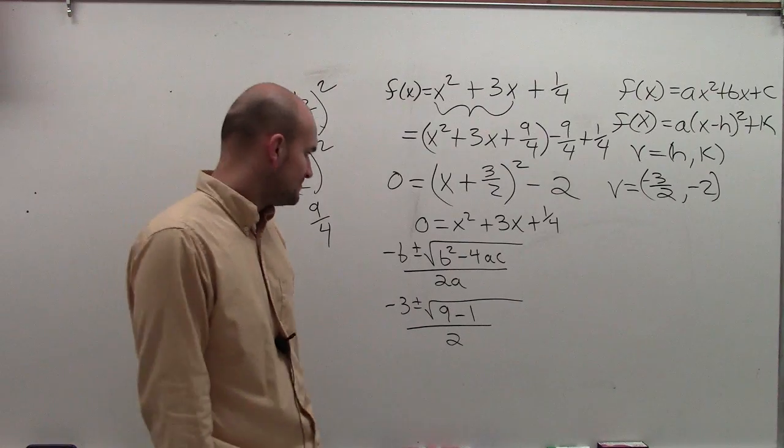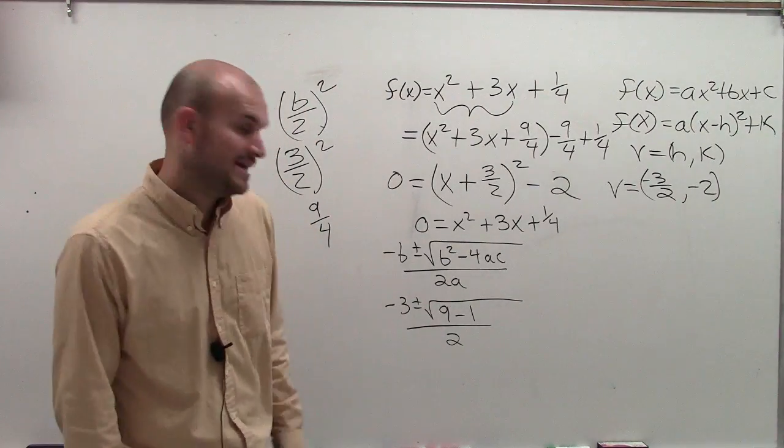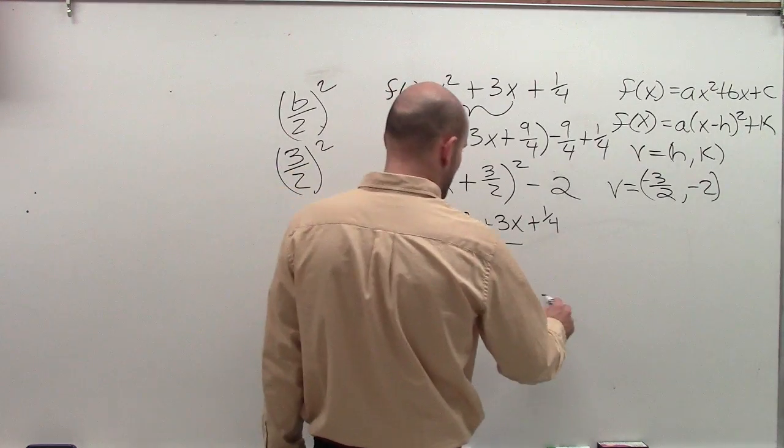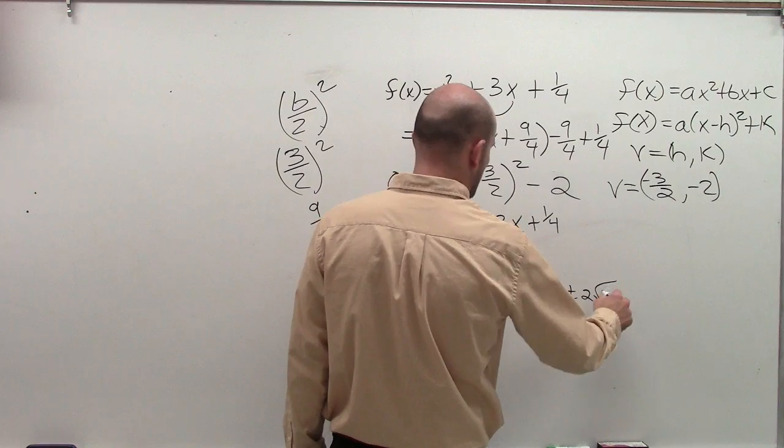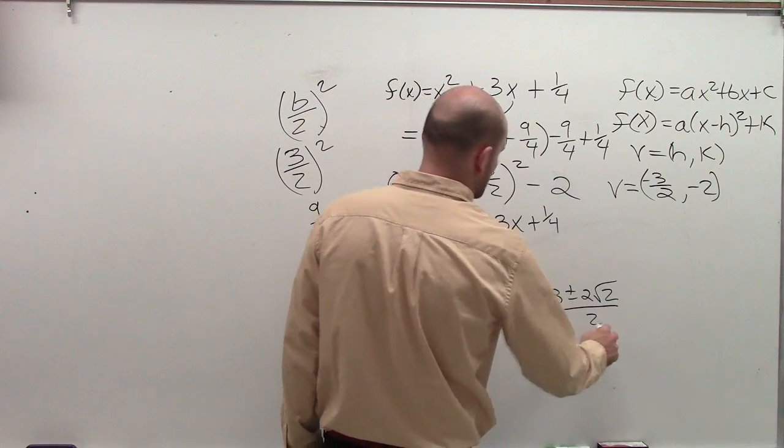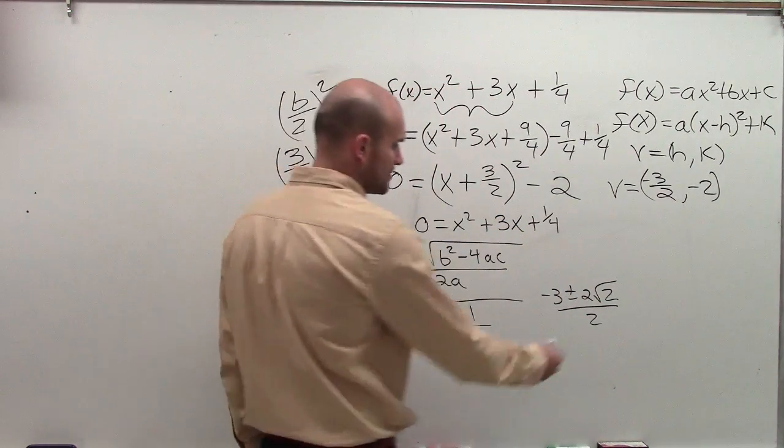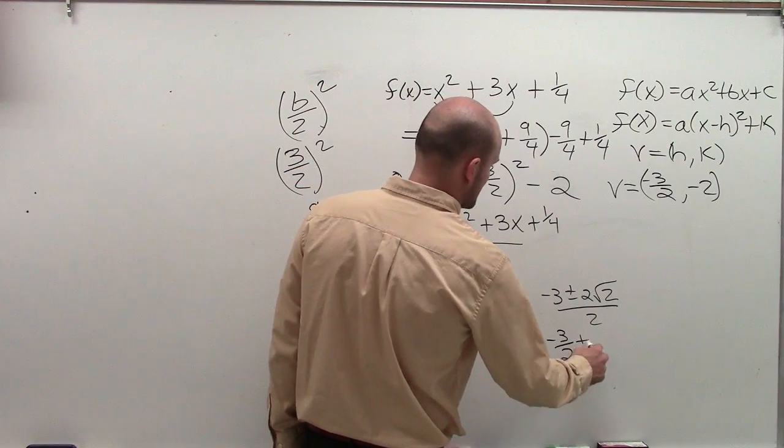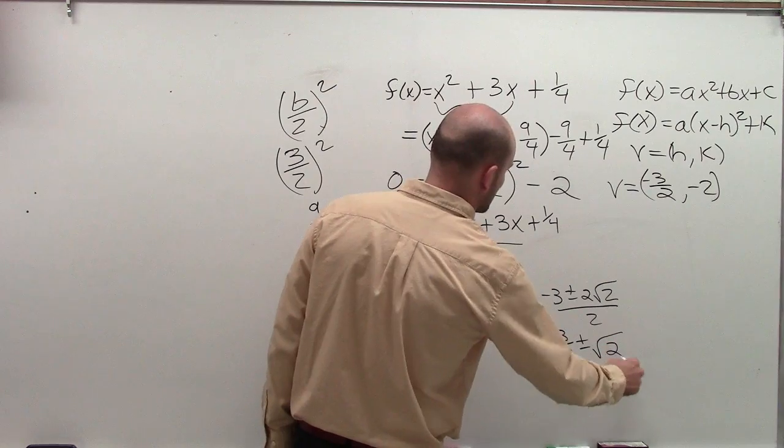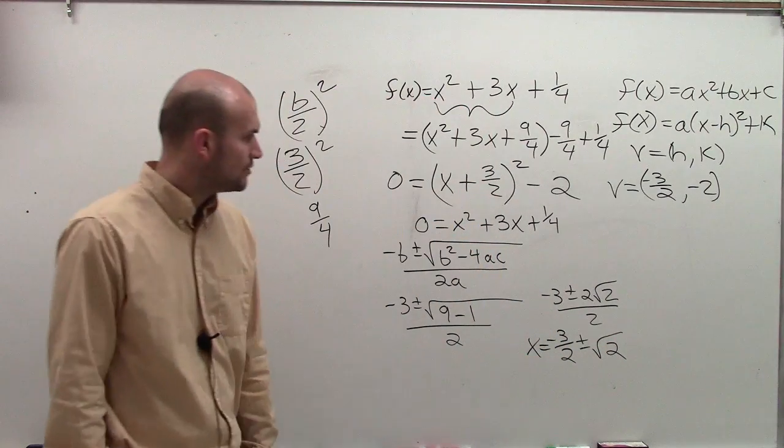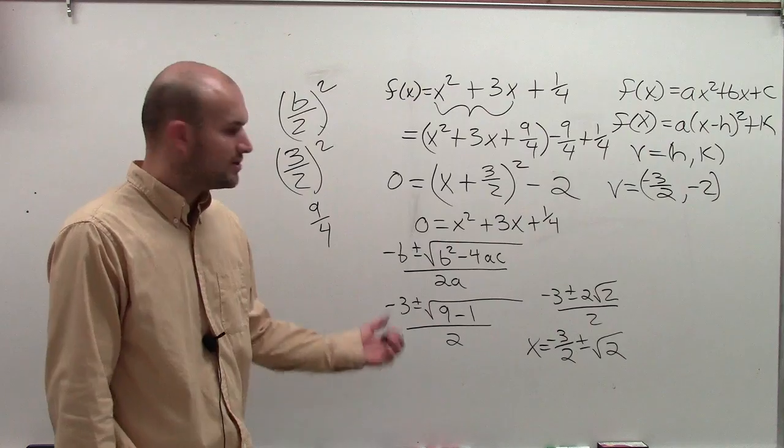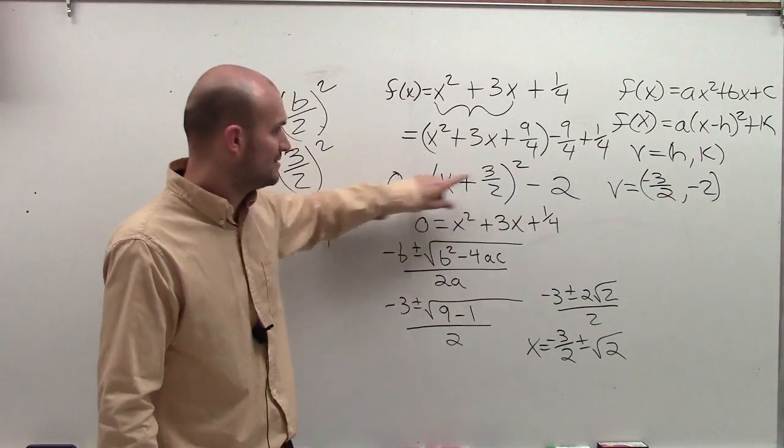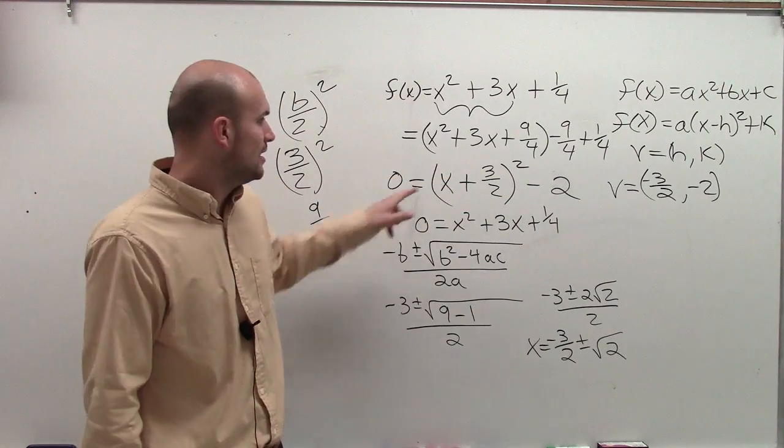Negative 9 minus 1 is negative 8. The square root of 8 is going to be reduced down to 2 radical 2. So I have negative 3 plus or minus 2 radical 2 divided by 2. When I divide my 2 into both of those terms, I get a negative 3 halves plus or minus the square root of 2. So my x-intercepts are going to equal a negative 3 halves plus or minus the square root of 2.